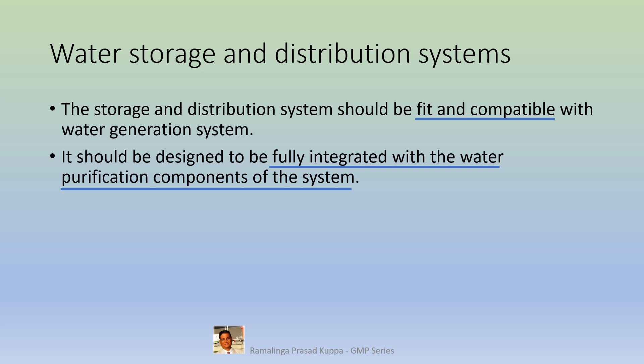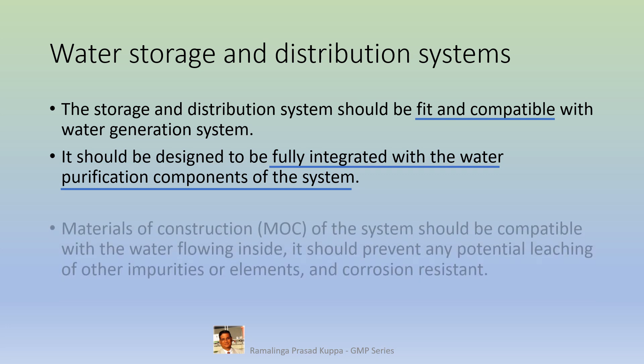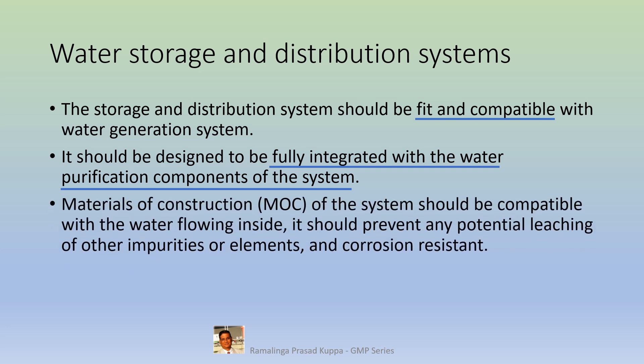Generation and distribution systems are complementary and paired to each other. Both must work together and be compatible with each other. Materials of construction (MOC) of the system should be compatible with the water flowing inside. It should prevent any potential leaching of impurities or elements and be corrosion resistant.